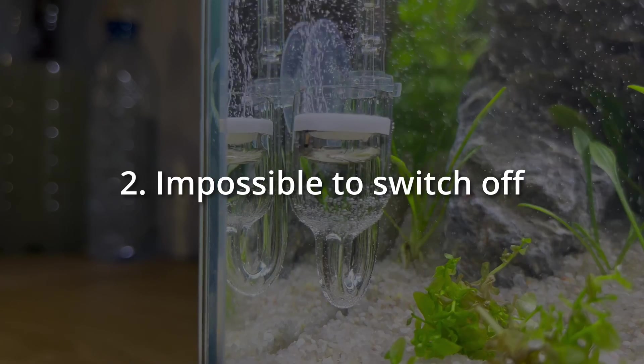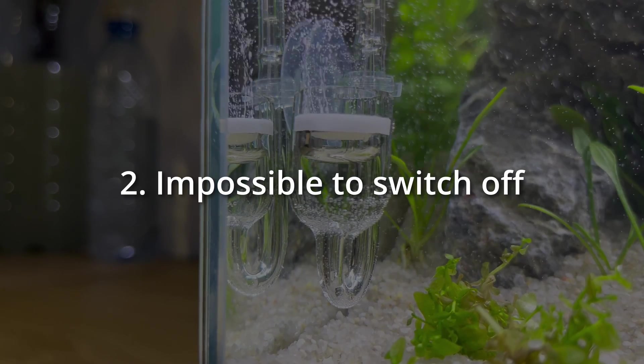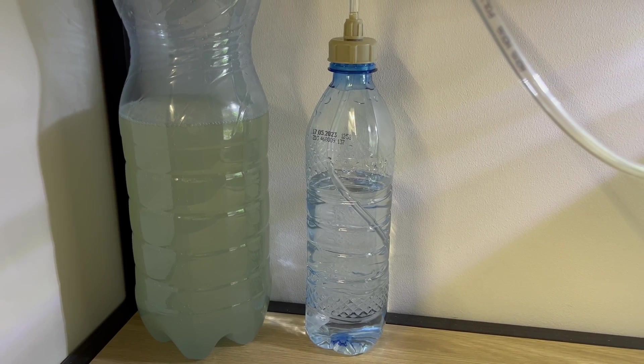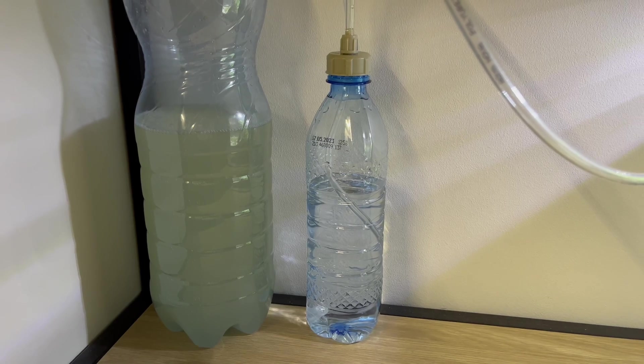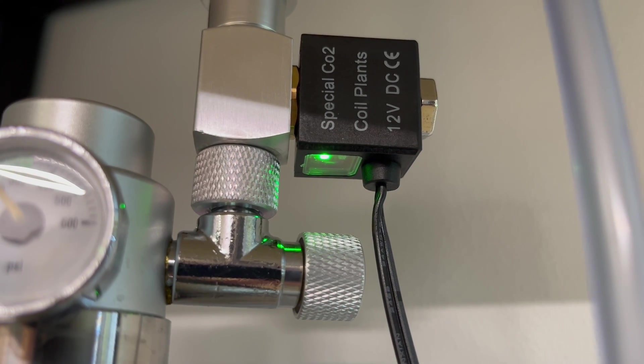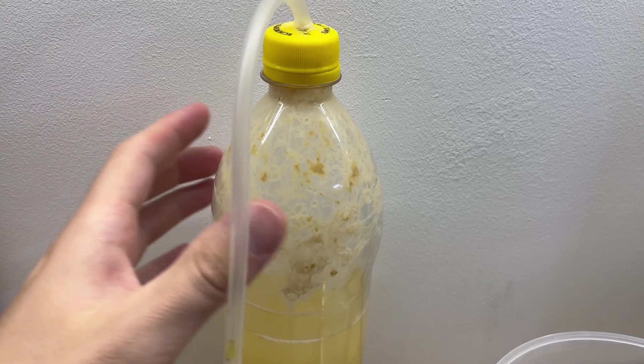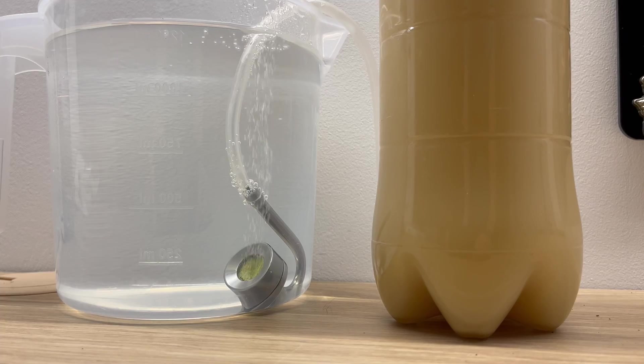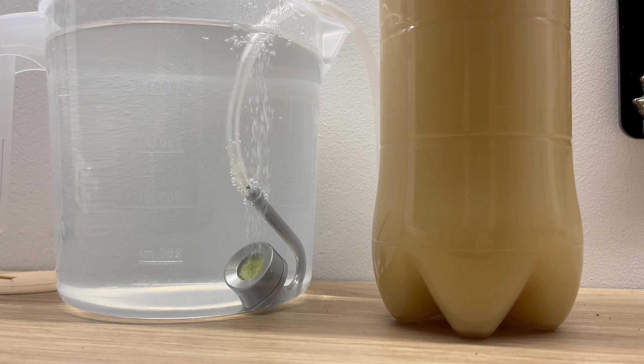Second problem is that you cannot shut it down overnight. This system is not designed to contain very high pressures. So using a solenoid is out of the question. Pressure buildup overnight would be too big, and entire system might just break apart.